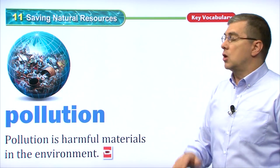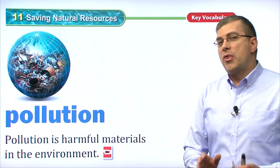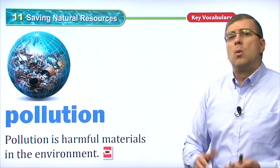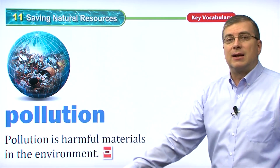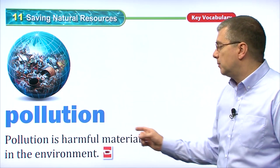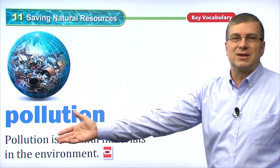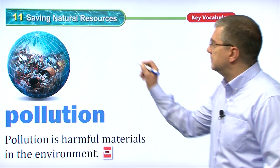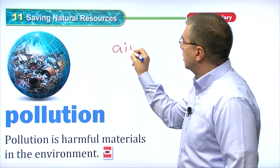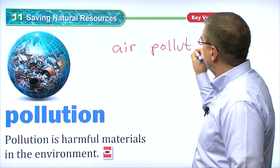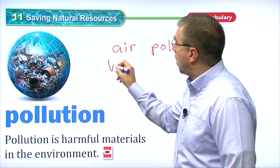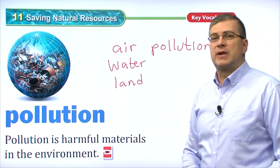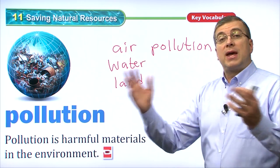There are a couple of other words to go over when talking about saving natural resources. One thing we want to avoid is pollution. If we don't recycle our old things, we have to put them somewhere — we put them in the land, and that causes land pollution. Pollution is harmful materials in the environment. There are basically three major types: air pollution, water pollution, and land pollution.